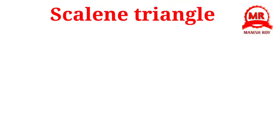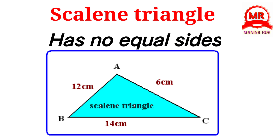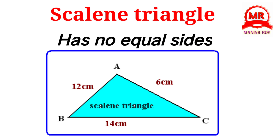Scalene triangle. A scalene triangle has no equal sides. You can see in this figure that all three sides of this triangle have different lengths, so it is called a scalene triangle.